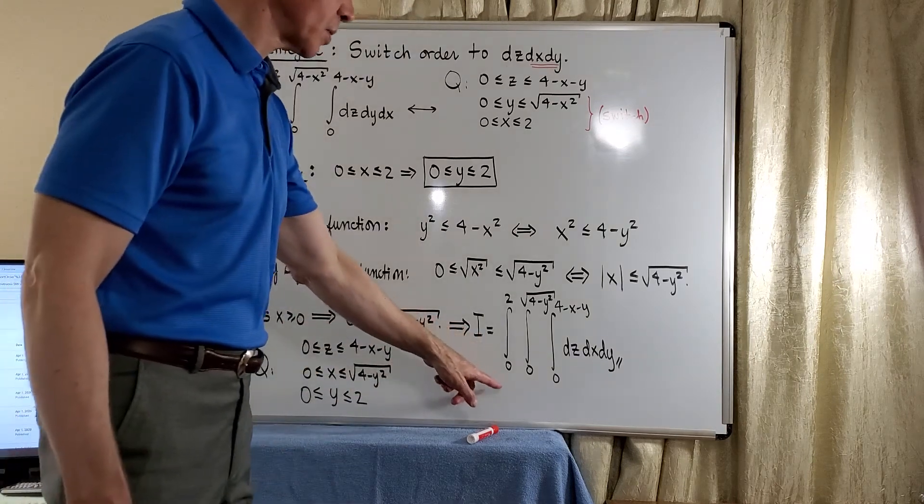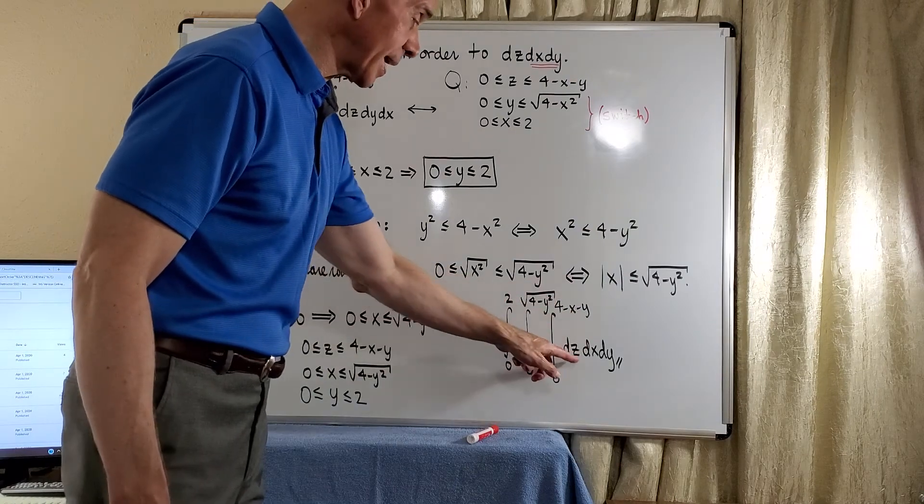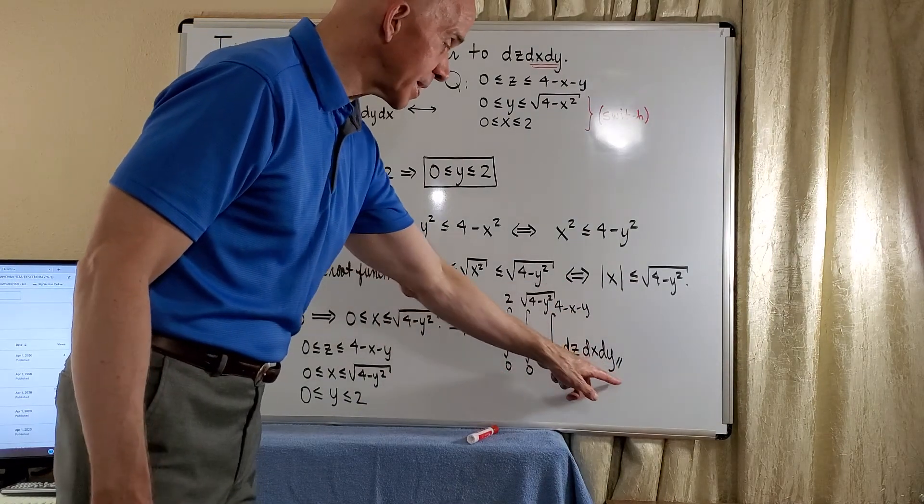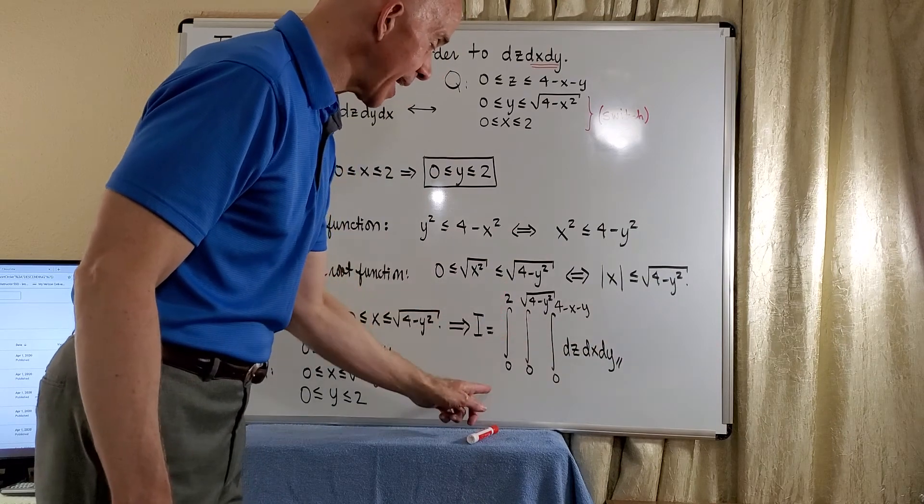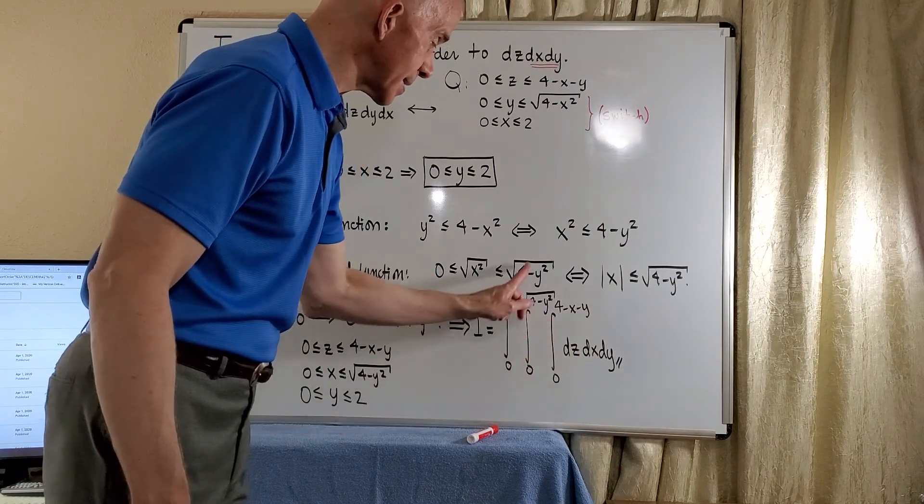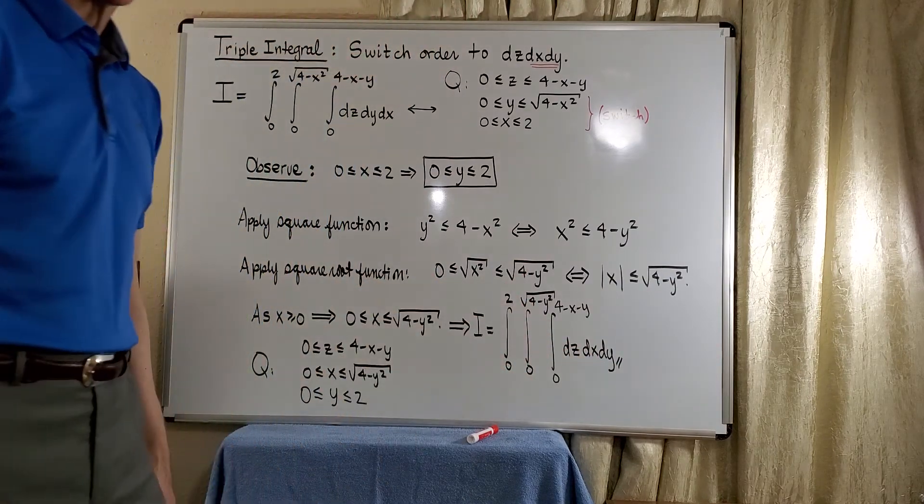And so when you write your triple integral, again, the dz is the same. But now, the dy is the last integral, and the dx is the middle integral, and we are done.